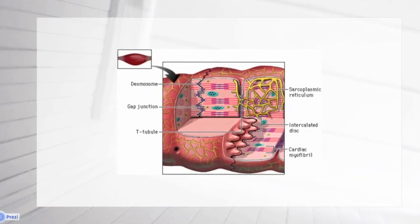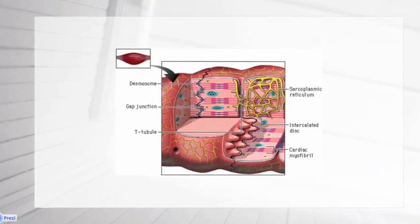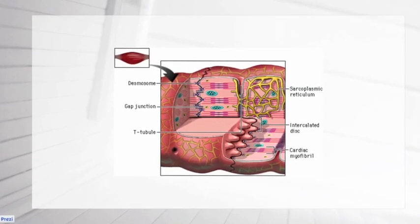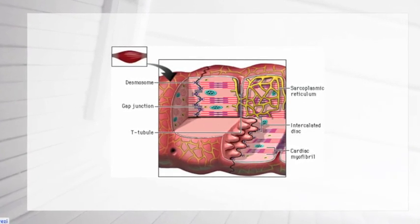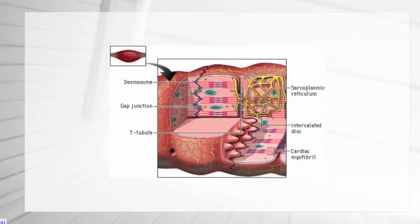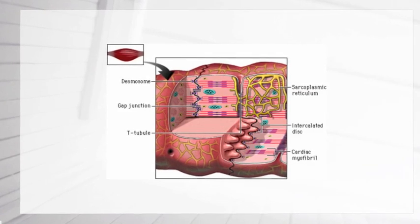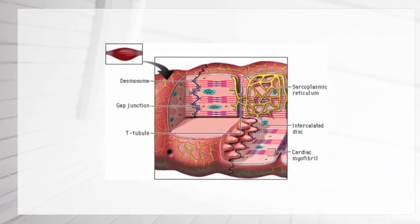Unlike skeletal and smooth muscle, which are two of the three muscles in the body, cardiac muscle cells branch off from each other using the intercalated discs.